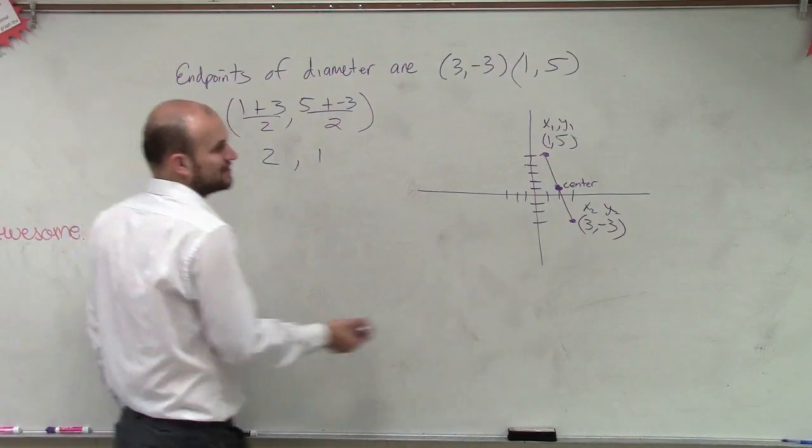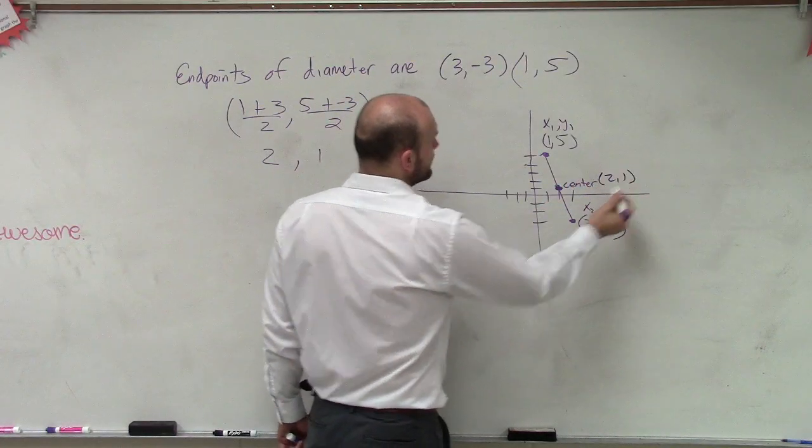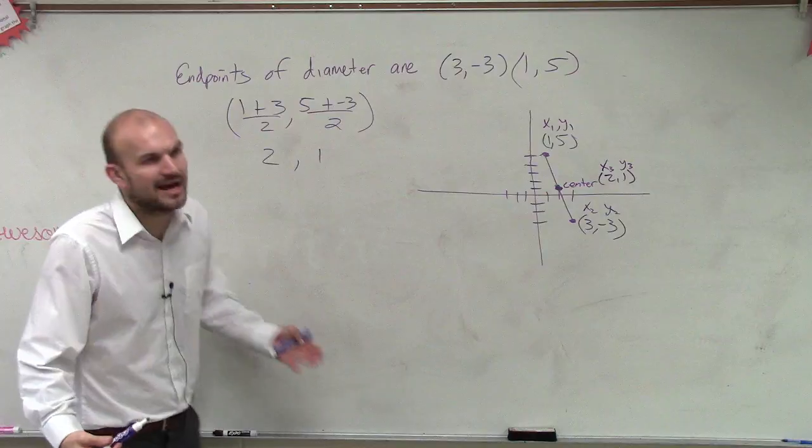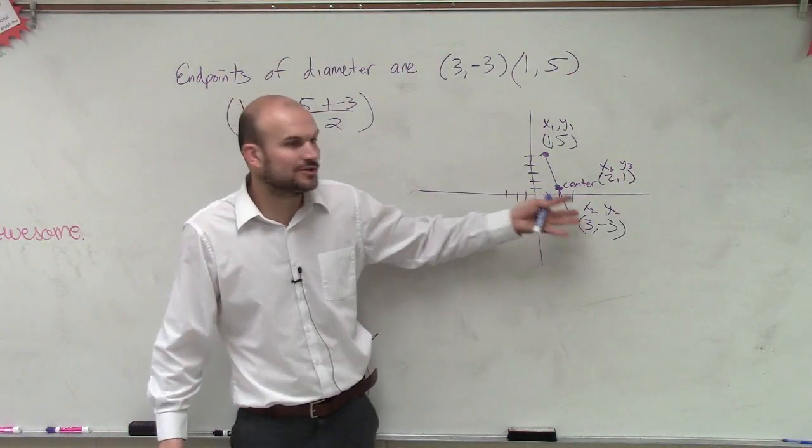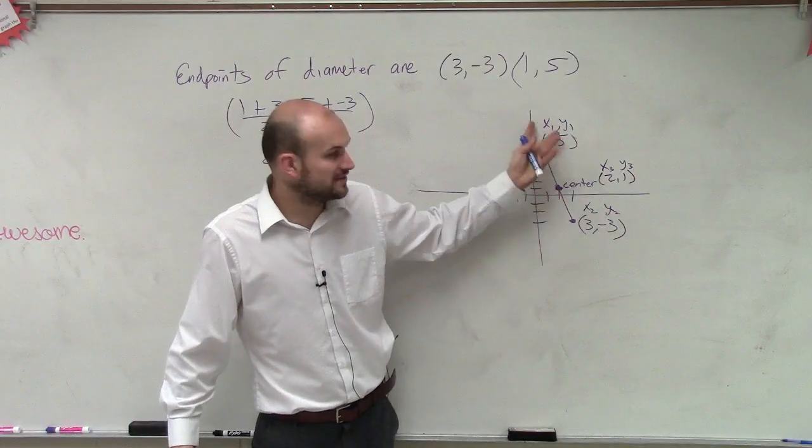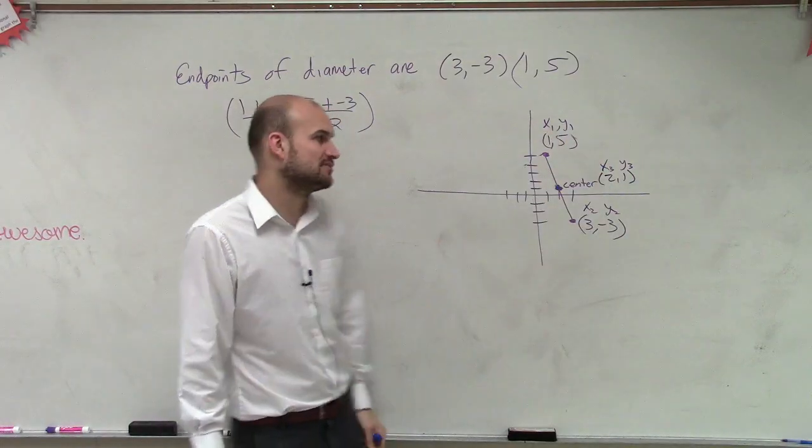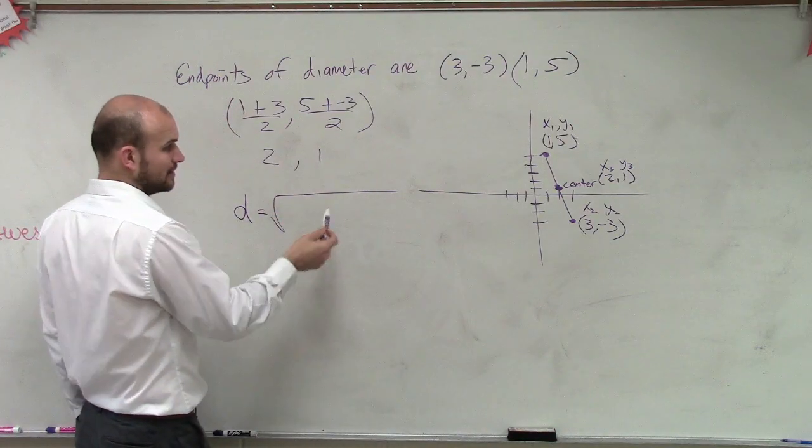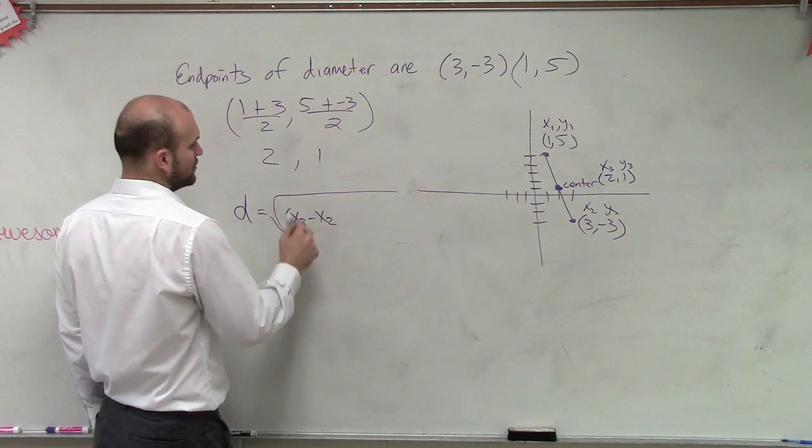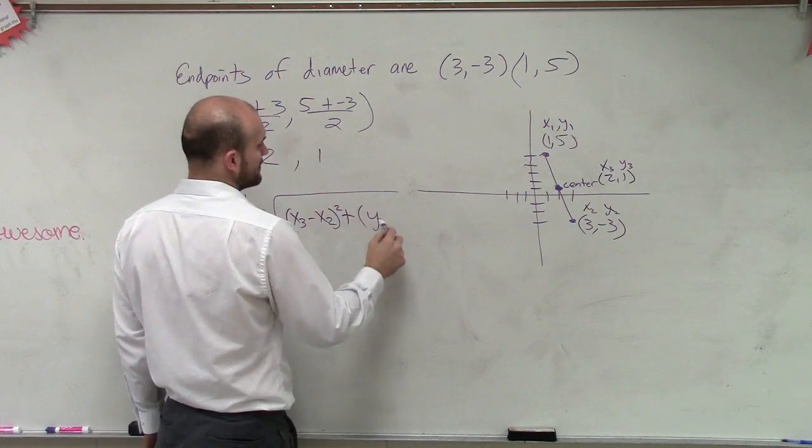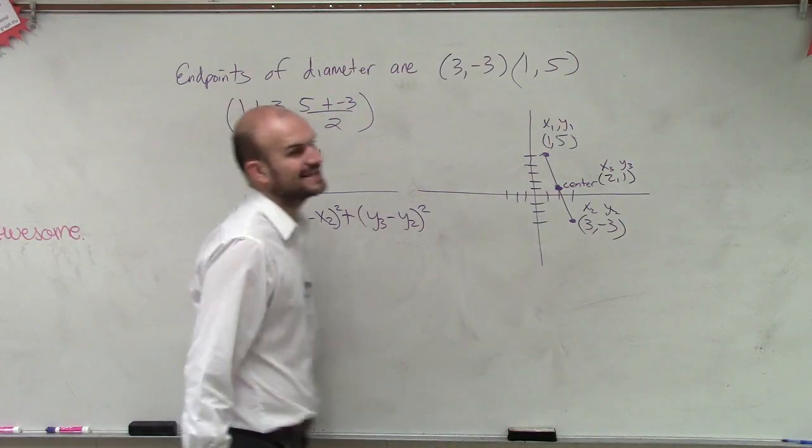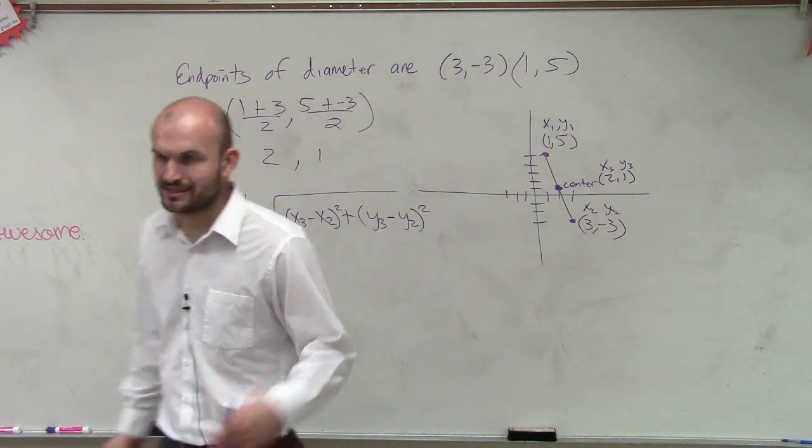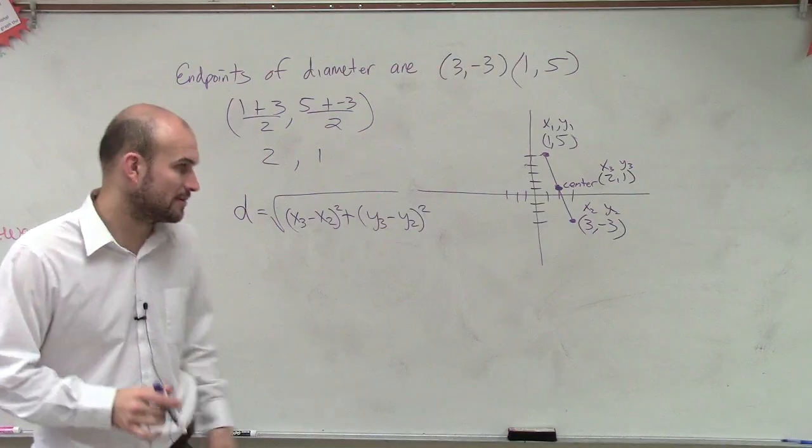We need to now find this point, which we said was 2 comma 1. Now we need to use the distance formula, which I'll call this x3, y3. It doesn't matter guys what you call it, x1, x2, x3. All we need to do is find the difference of these two points, or the difference of those two points. So I'll use these two points to prove my point. So the distance equals the square root of, let's do x3 minus x2 squared plus y3 minus y2 squared. Again, ladies and gentlemen, it does not matter. I could use x3 and x1. It doesn't matter. I just need to find the difference between those two points and square it.